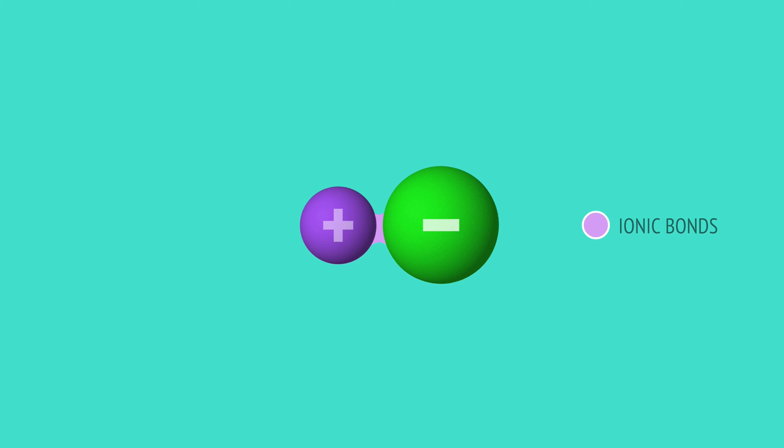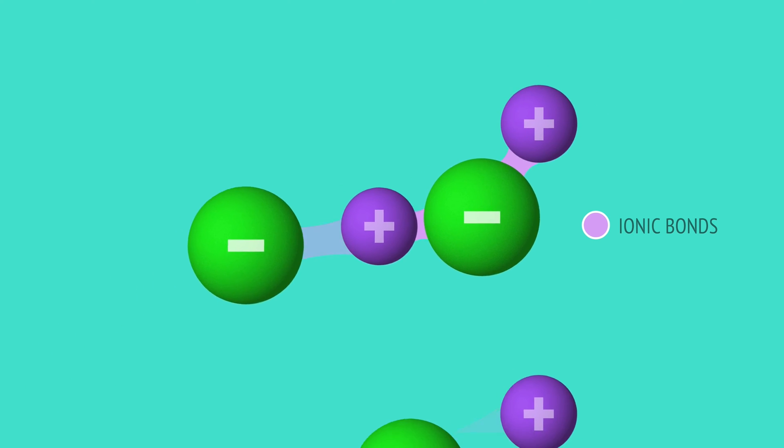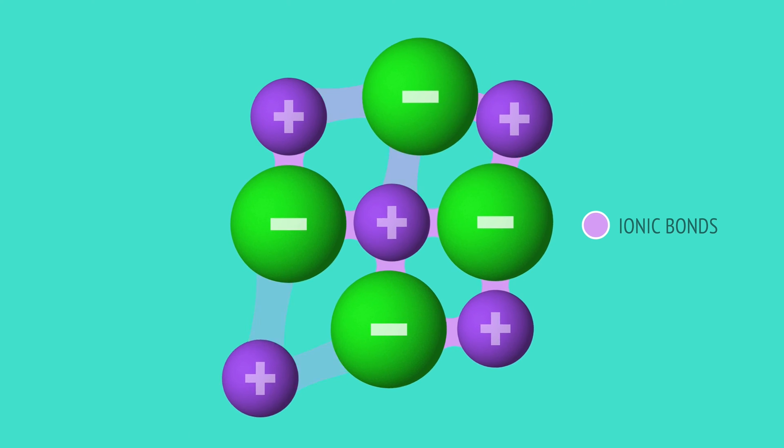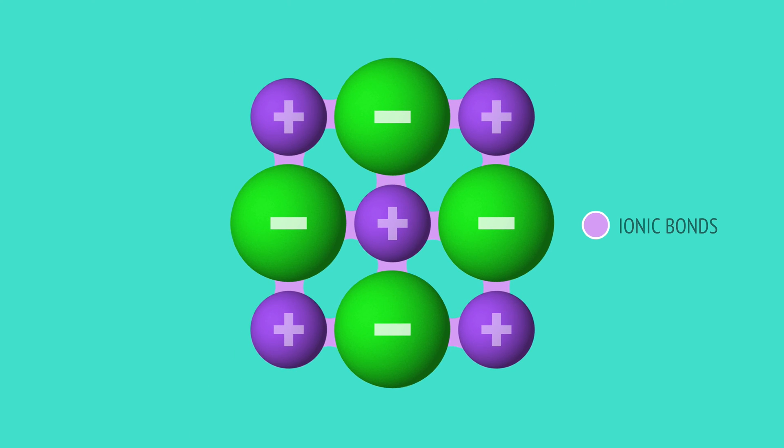Ionic bonds are non-directional, meaning they act in all directions. So, instead of forming discrete molecules, these ions attract and bond with other cations and anions to build a regular lattice of ions.